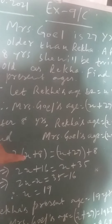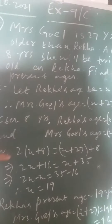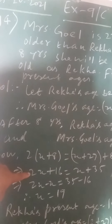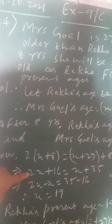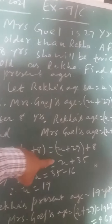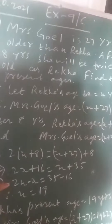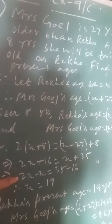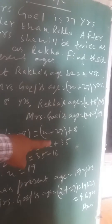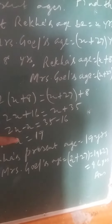Now, 2(X plus 8) equals X plus 27 plus 8. After calculation, 2X plus 16 equals X plus 35. Next, 2X minus X equals 35 minus 16. So X equals 19.